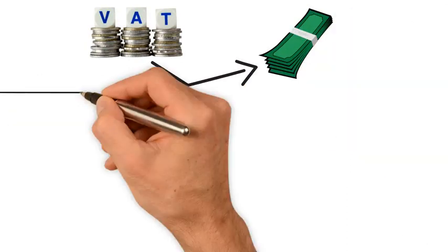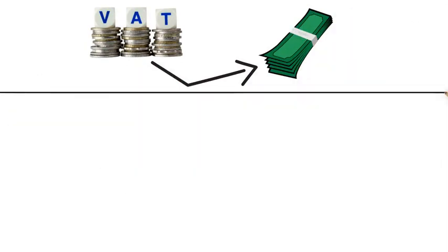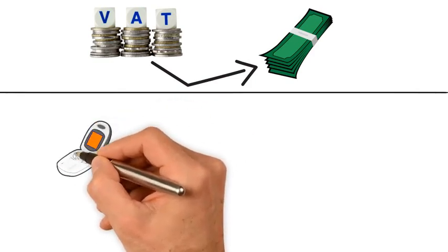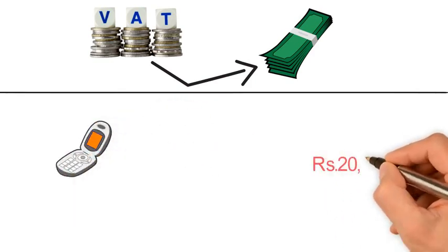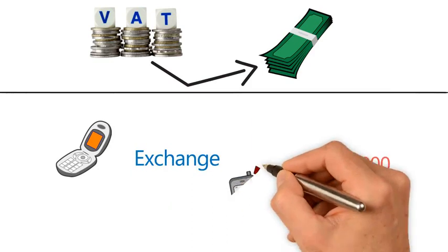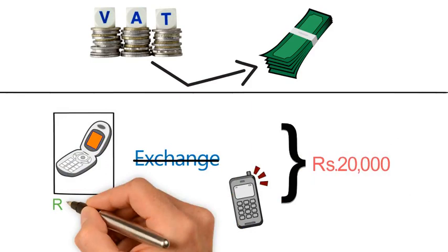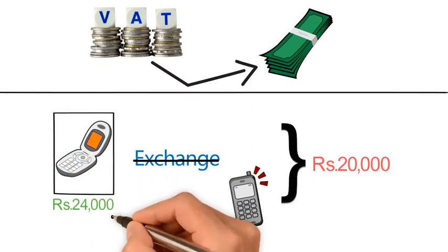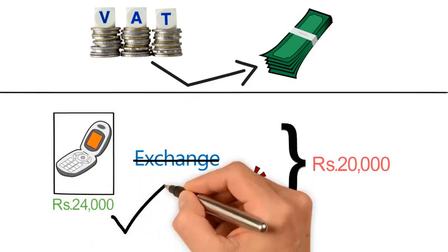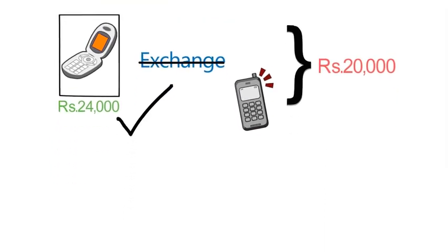According to an example mentioned in the draft rules, where a new phone is supplied for Rs 20,000 along with the exchange of an old phone and if the price of the new phone without exchange is Rs 24,000, the open market value of the new phone is Rs 24,000.